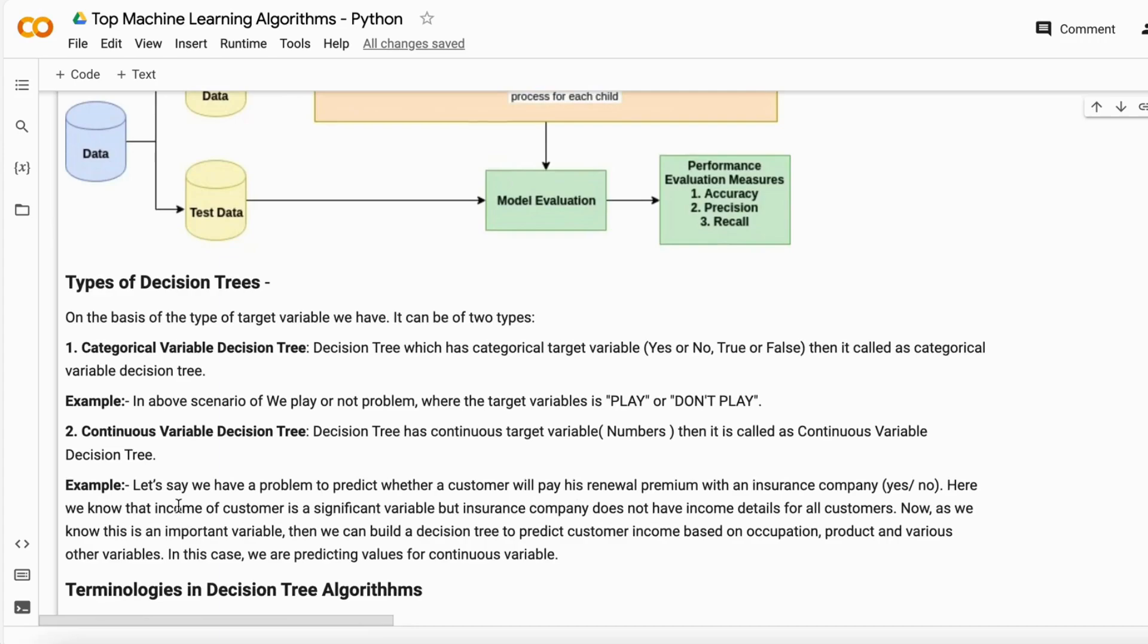I'm giving you an example here as well. Let's say we have a problem and want to predict whether a customer will pay his renewal premium with an insurance company or not. It is a binary classification problem. We want to predict yes or no. So here we know the income of a customer is significant variable. We know that the income is significant variable, but insurance company does not have the income retained for all the customer.